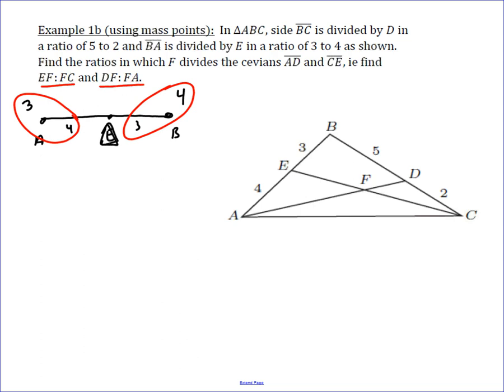The other thing we do is we assign a value to the fulcrum based on the mass that is added to the outside. So in this example that would be 7. Applying mass: we let A have mass 3 and B have mass 4.